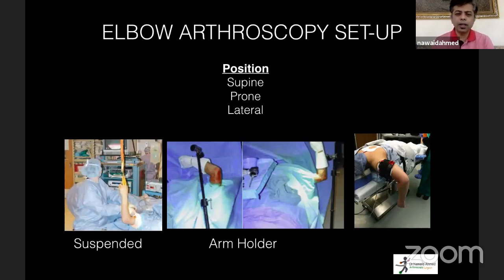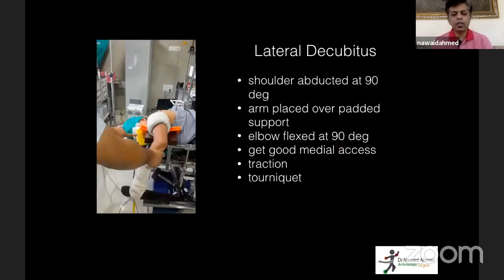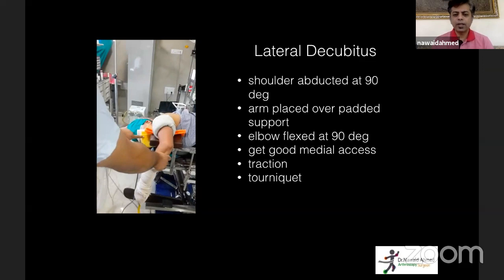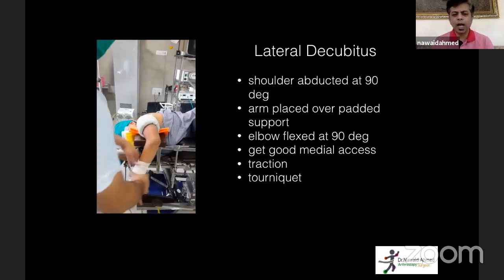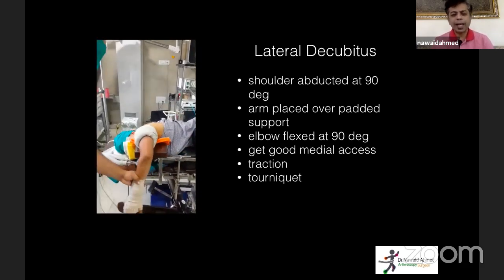Elbow arthroscopy can be done in the supine, prone, or lateral position. In supine you use a suspended elbow or arm holder, but the elbow is less stable and posterior compartment access is difficult. In prone the elbow is very stable but airway access is compromised. We use a lateral decubitus position — the best of both worlds — with good airway access, a stable elbow, padded support, and the elbow placed at 90 degrees.